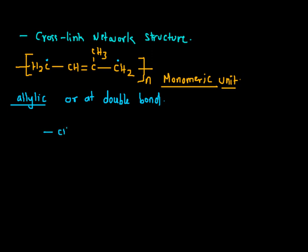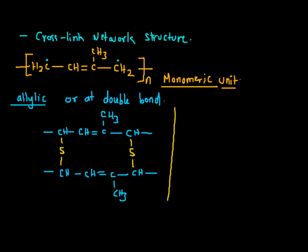So this is CH, CH double bond C, CH. Another unit is CH. Now sulfur is added at allylic position. Now apart from allylic, it can also be added at this double bond.